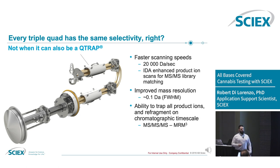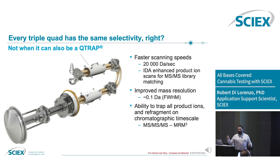In cases where you have a matrix with a huge degree of matrix interferences, you can cut through that noise. When we went from single quads to triple quads, we cut through a huge amount of background to improve our LODs and LOQs. Now we're doing this again to take it further when we need to.